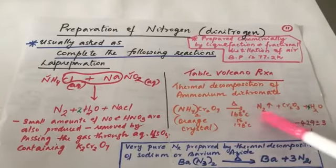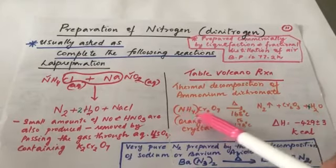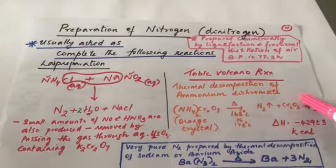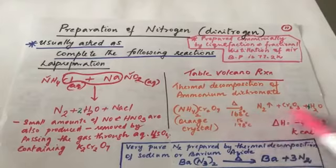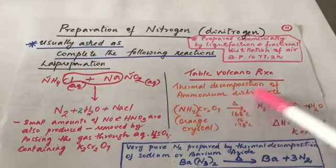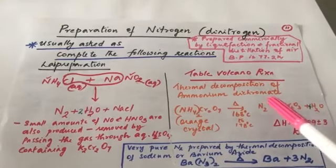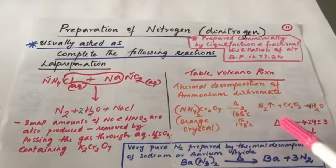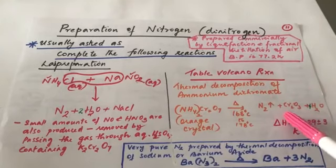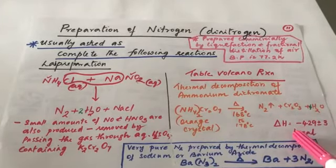The thermal decomposition of ammonium dichromate gives N2, 4H2O, and Cr2O3. The ΔH is −429 ± 3 kcal. The products are nitrogen gas, water, and chromium trioxide. This is how the volcano reaction proceeds.